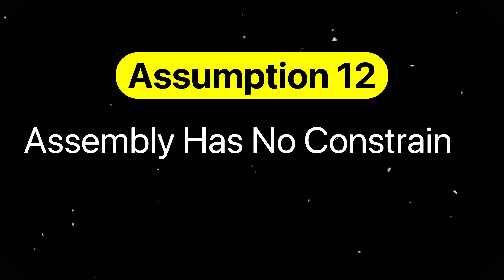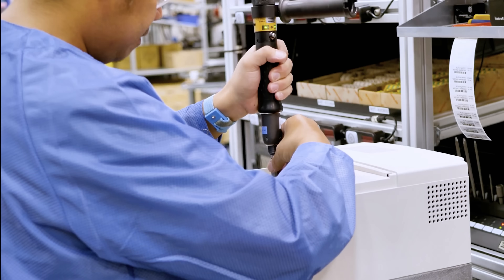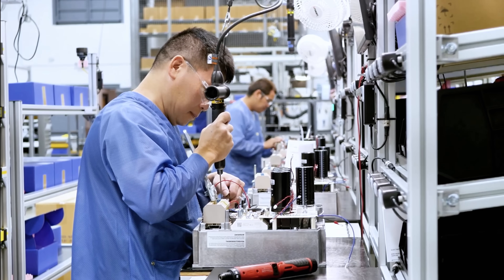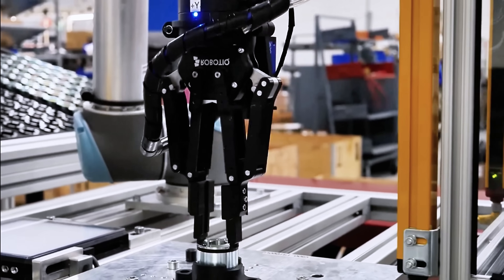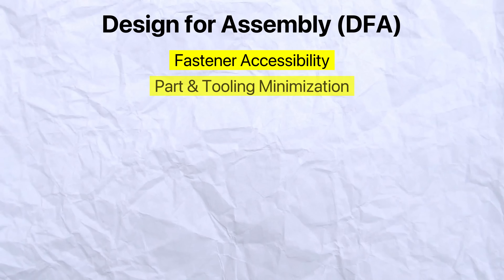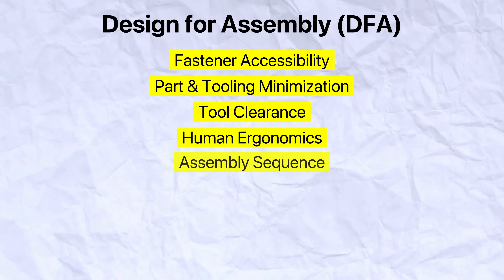Assumption number twelve is assembly has no constraints. CAD lets you assemble components in any order, but on the shop floor, things need to be installed in a specific order — either manually or automatically — often with limited access. Imagine placing a screw deep inside a housing without any clearance for a screwdriver, or designing an enclosure that requires bending a wire awkwardly to fit. These things increase cycle time, labor costs, and lead to quality issues. Implement design for assembly (DFA) principles early on. Think about bolt accessibility, minimizing parts and tooling, tool clearance, human ergonomics, and assembly sequence. A product that requires three hours instead of 20 minutes to assemble due to awkward fastener locations is a failed design.